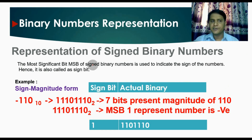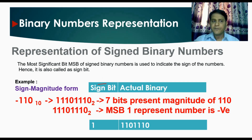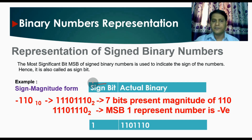Now let us understand the representation of signed binary numbers. The most significant bit of a signed binary number is used to indicate the sign, so it is also called the sign bit. The rule for signed binary number representation is: first we have the sign bit and then the actual binary number. This is represented in sign-magnitude form.